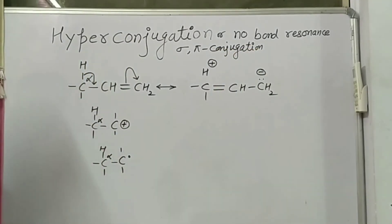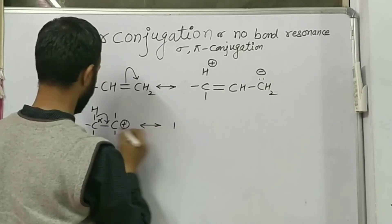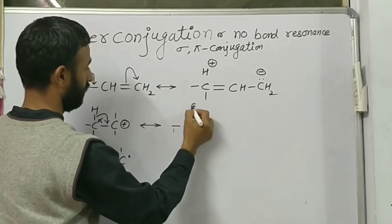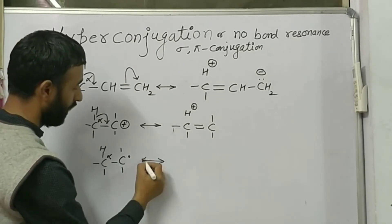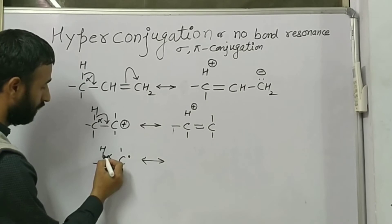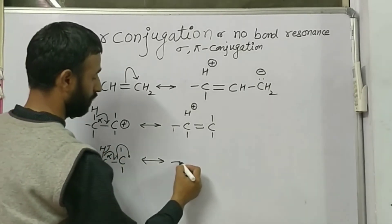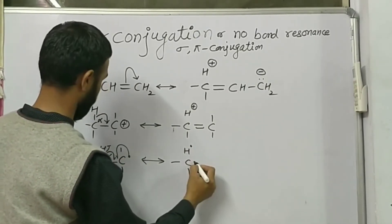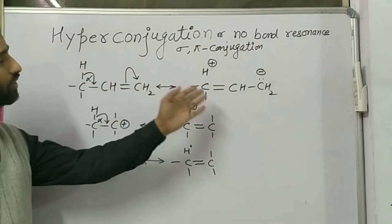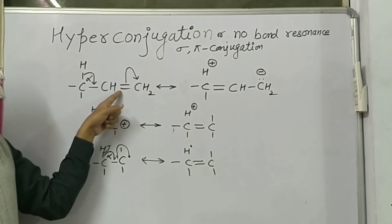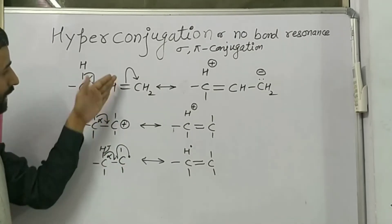The same applies in the case of carbocation and free radical. In the case of a free radical, there is homolytic cleavage, so there is one electron involved. Overall, there is delocalization of the double bond, cation, or free radical.